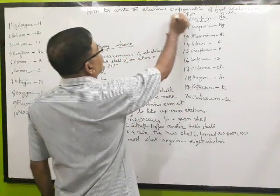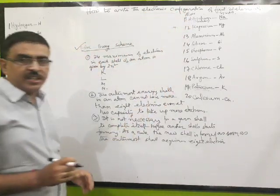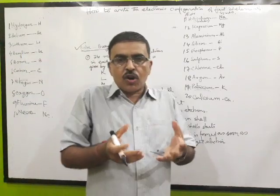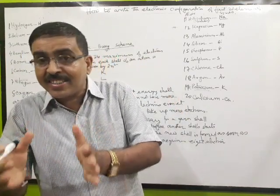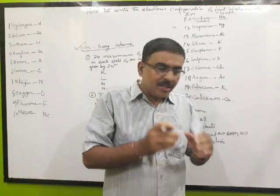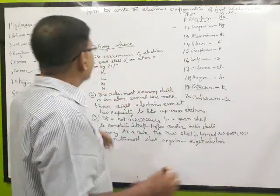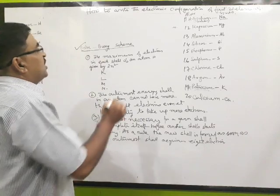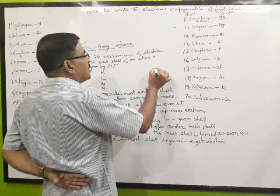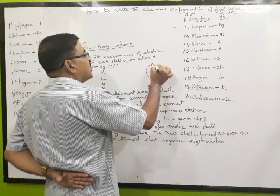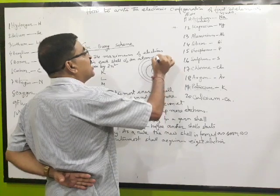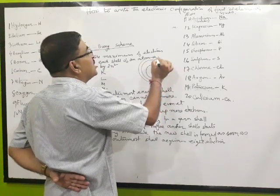Now we will try to write the electronic configuration. First of all, what is electronic configuration? Electronic configuration is the distribution of electrons in the energy shells. You know the nucleus is there, and the energy shells are K-shell, then L-shell, then M-shell — these are the orbits or shells in which electrons revolve around the nucleus.